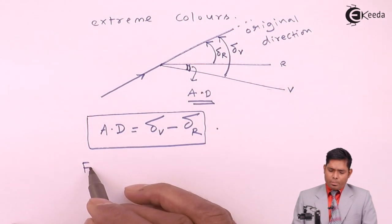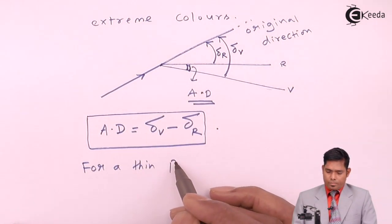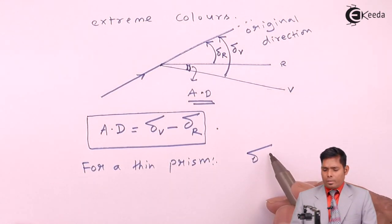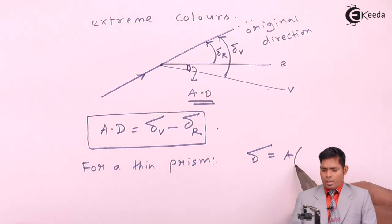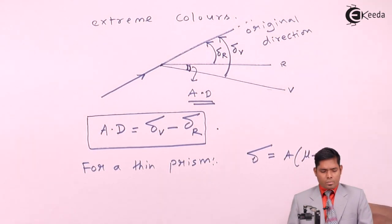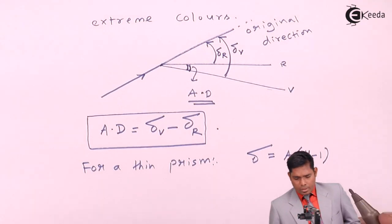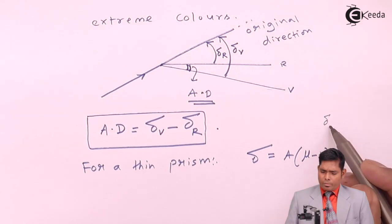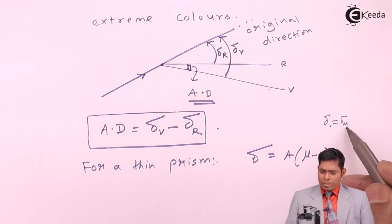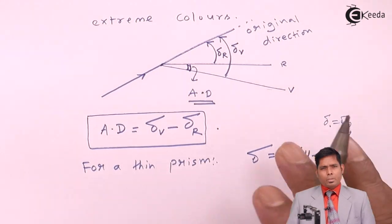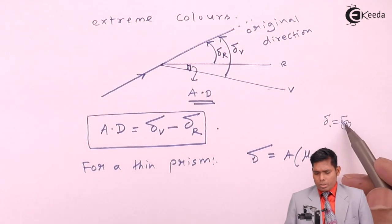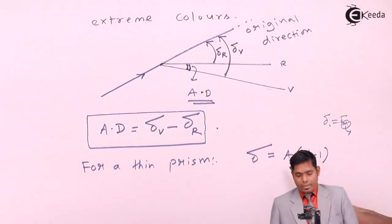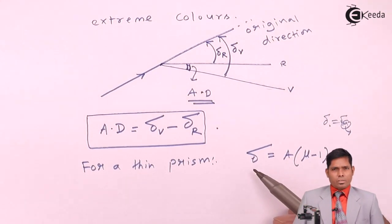For a thin prism, the formula is: δ = A(μ − 1), where δ is always the minimum deviation. Since it is always the minimum deviation, there is no need to write the subscript M — you just write δ. So δ = A(μ − 1), where this δ is actually δ minimum.